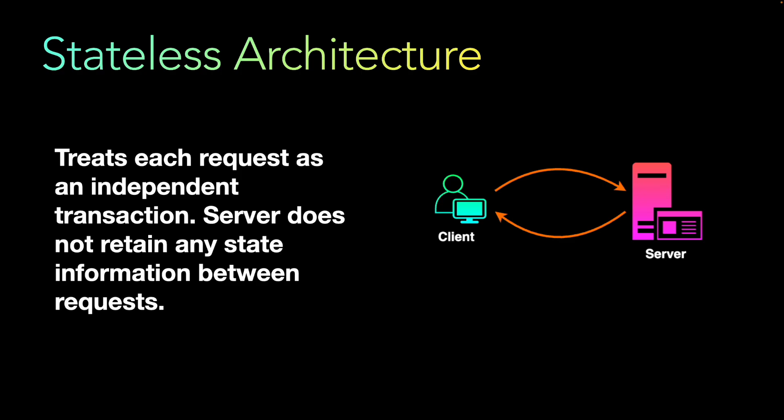Some best techniques for stateless design include using tokens like JWT to manage user sessions securely, implementing caching mechanisms to reduce redundant data fetching and improve performance, and using pagination for handling large data sets to reduce the amount of data transferred per request. These techniques all reduce the dependency of one request on another, which is the essence of stateless architecture.